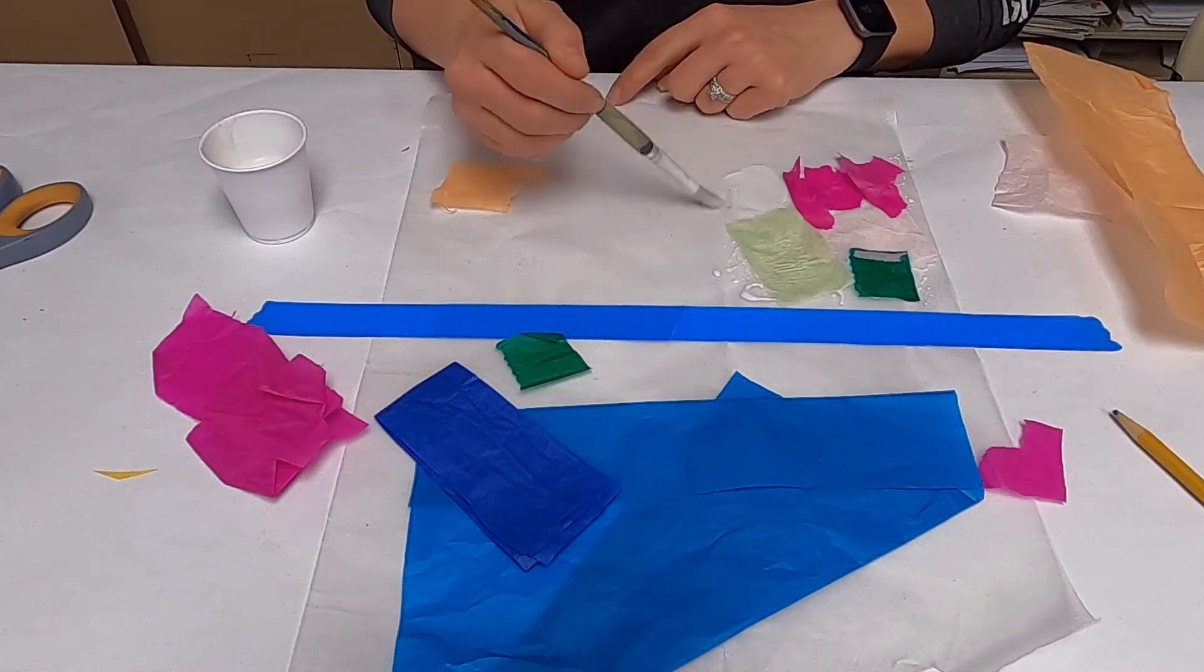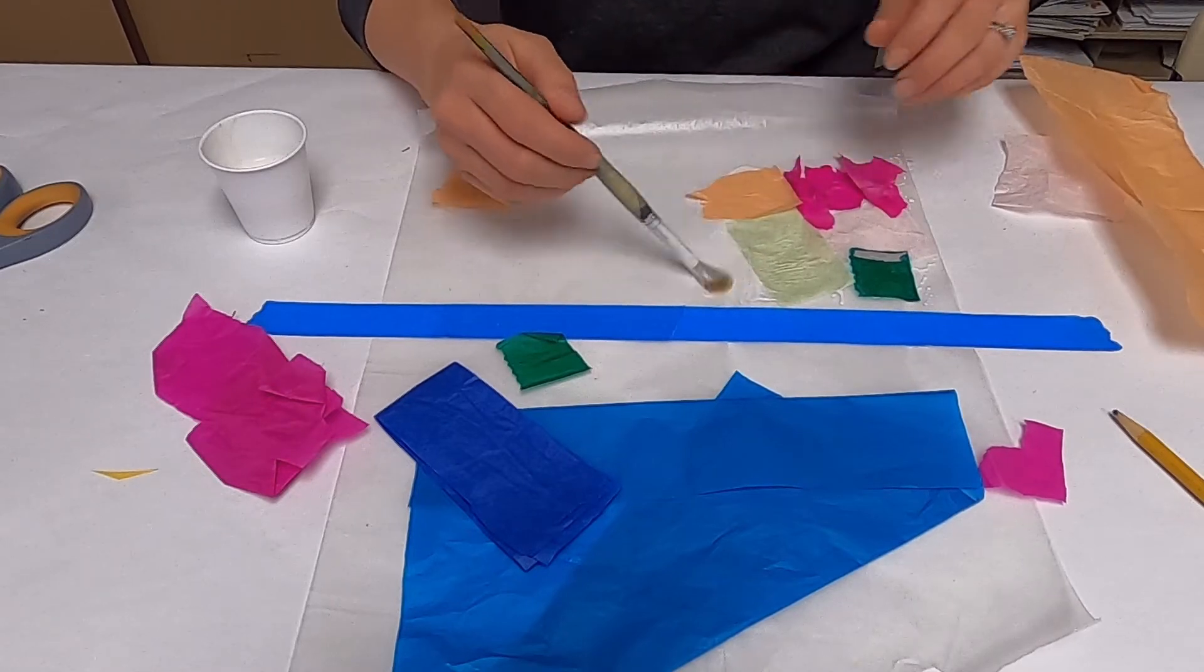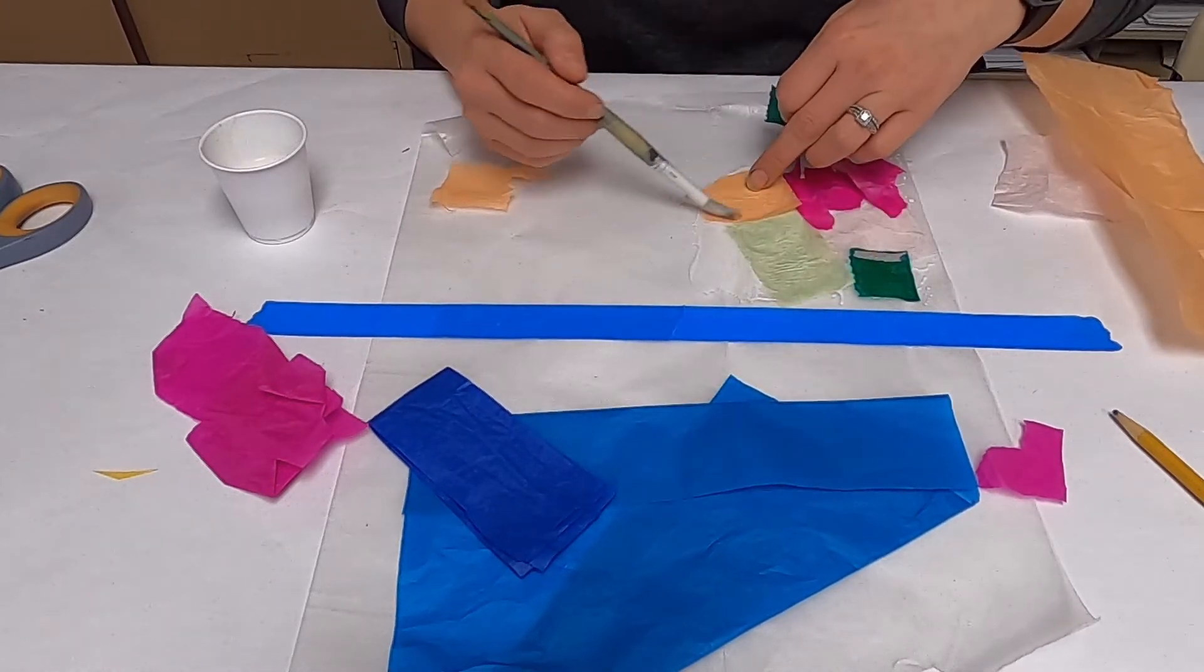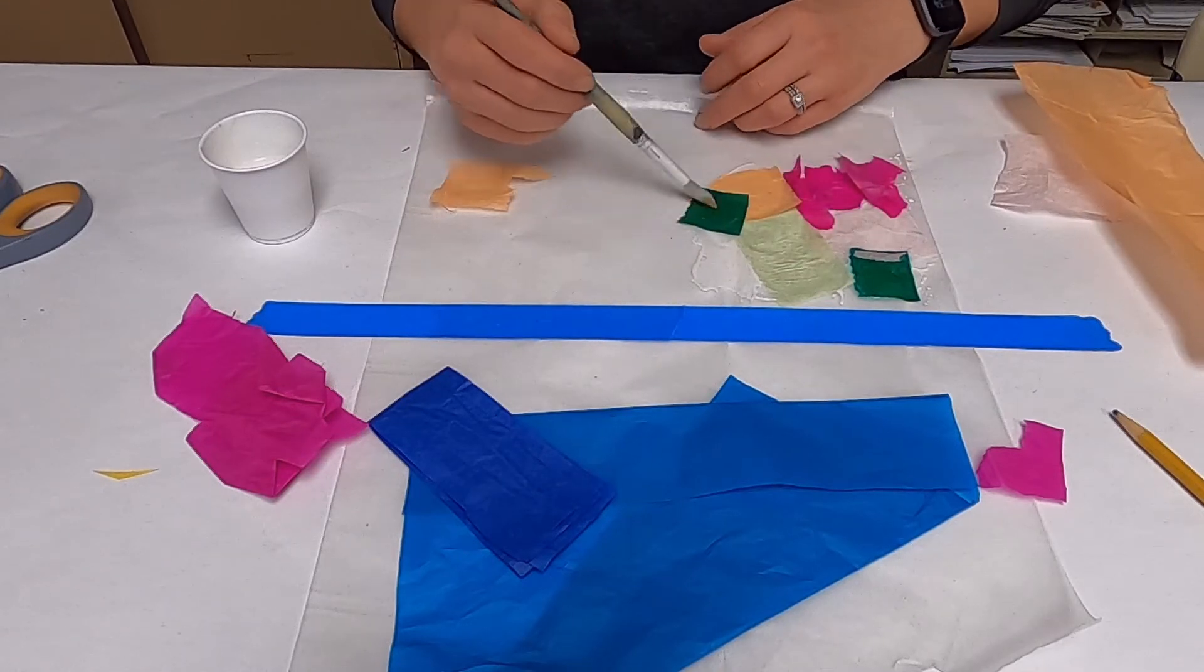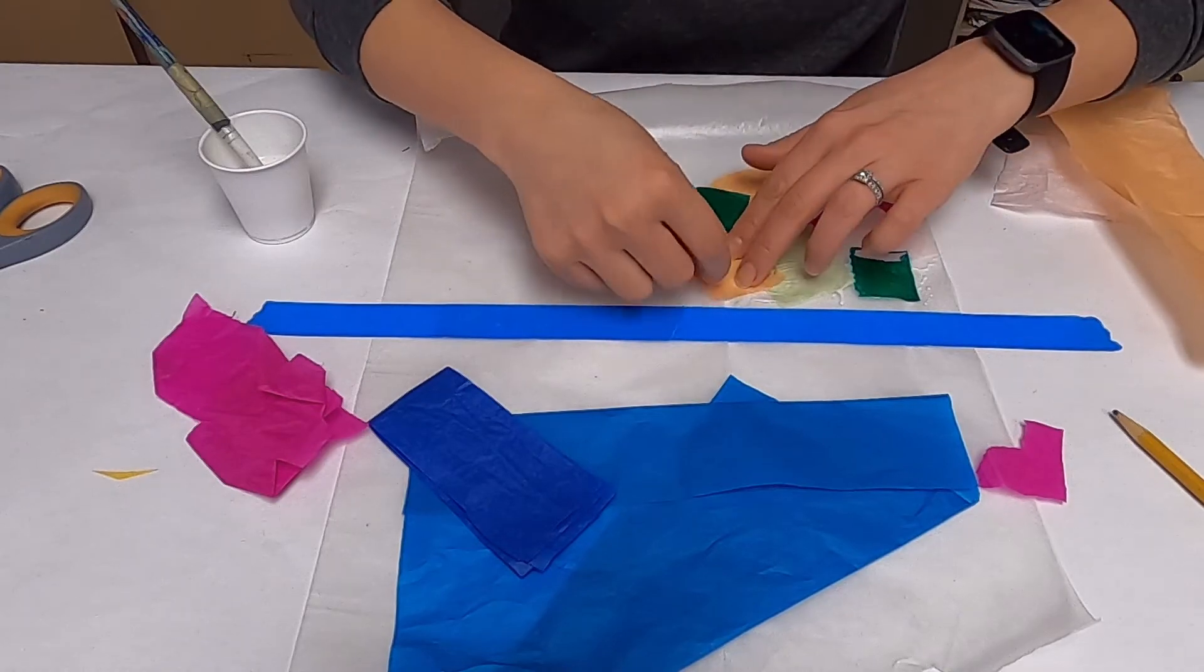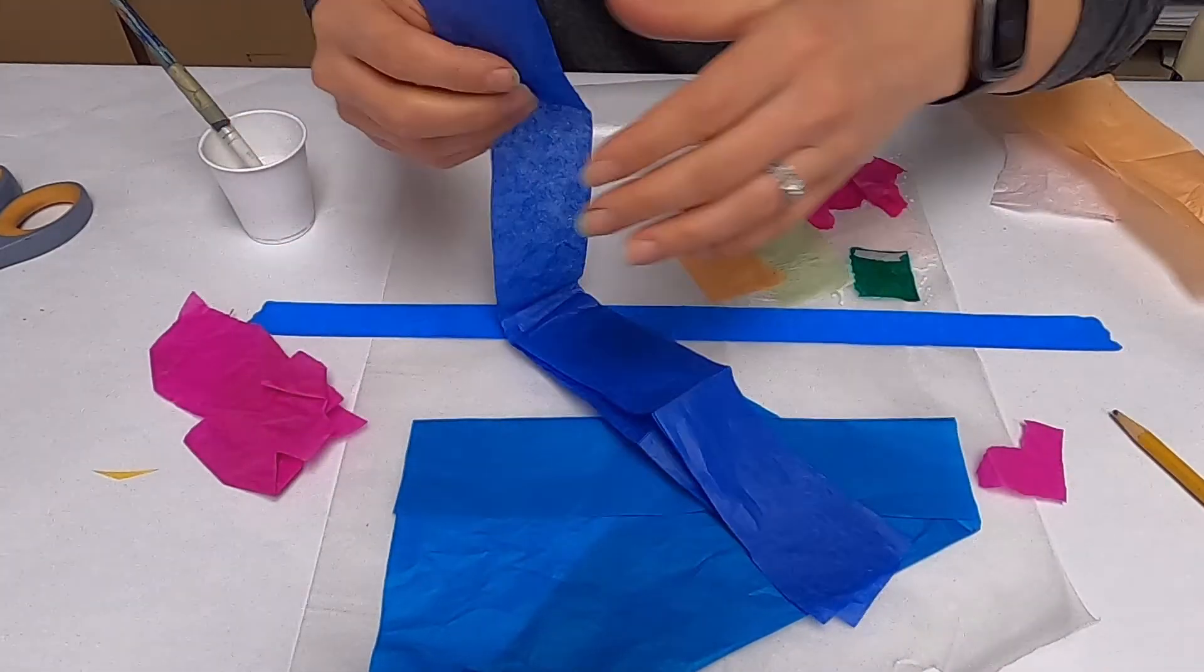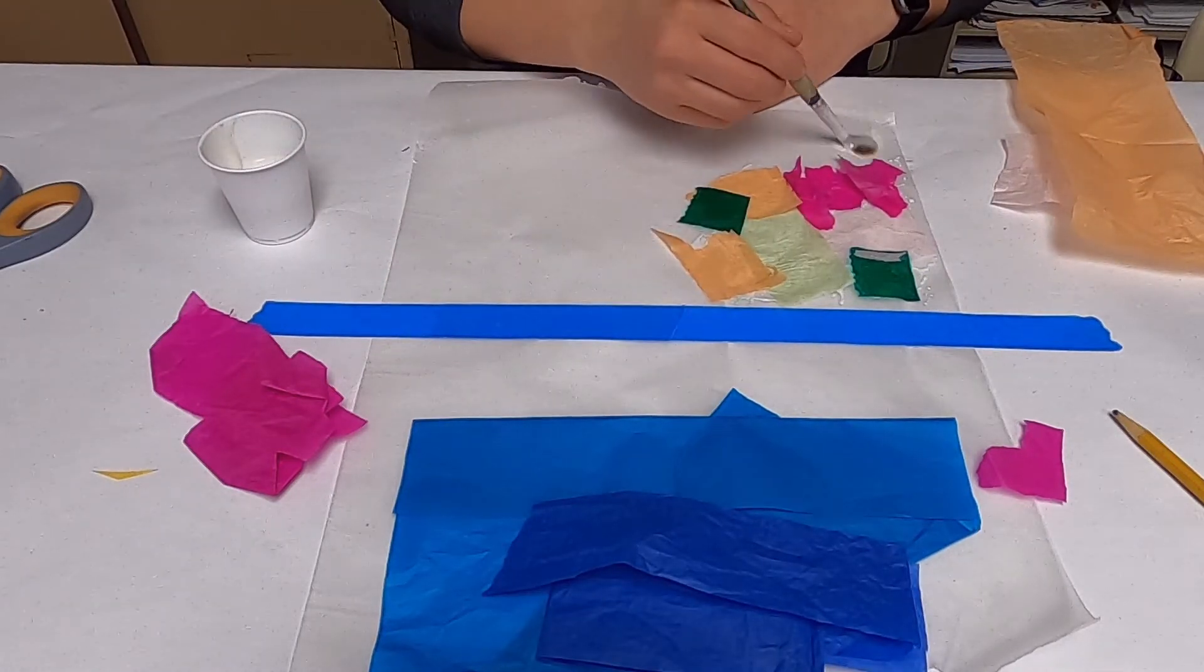Just keep going, adding a little bit more everywhere. They can be big chunks or little chunks. You can overlap like I'm doing here and go on top of it, however you want. Keep adding more colors and different sizes.